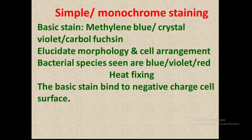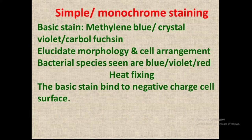Based on the type of stain used, bacterial species can be seen as blue, violet, or red color. If you use methylene blue, bacteria appear blue; crystal violet gives violet color; and carbol fuchsin shows red color. Basic stains are positive charge stains containing a cationic chromophore, which can bind to the negative charge cell surface.